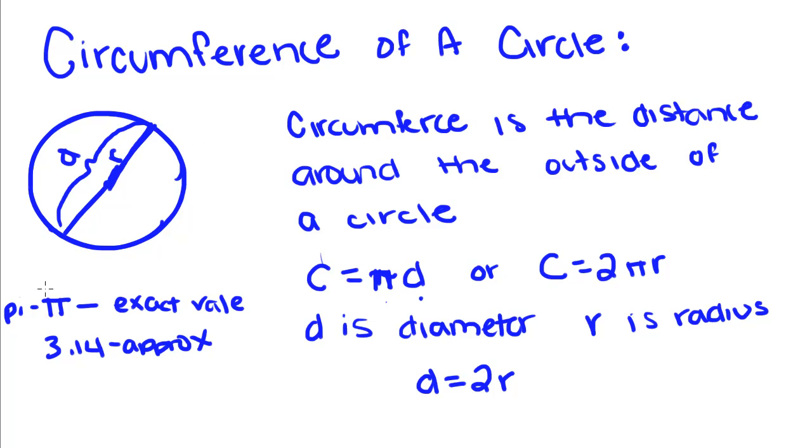This funny looking thing right here is called pi, and we have to multiply diameter by pi to find circumference.